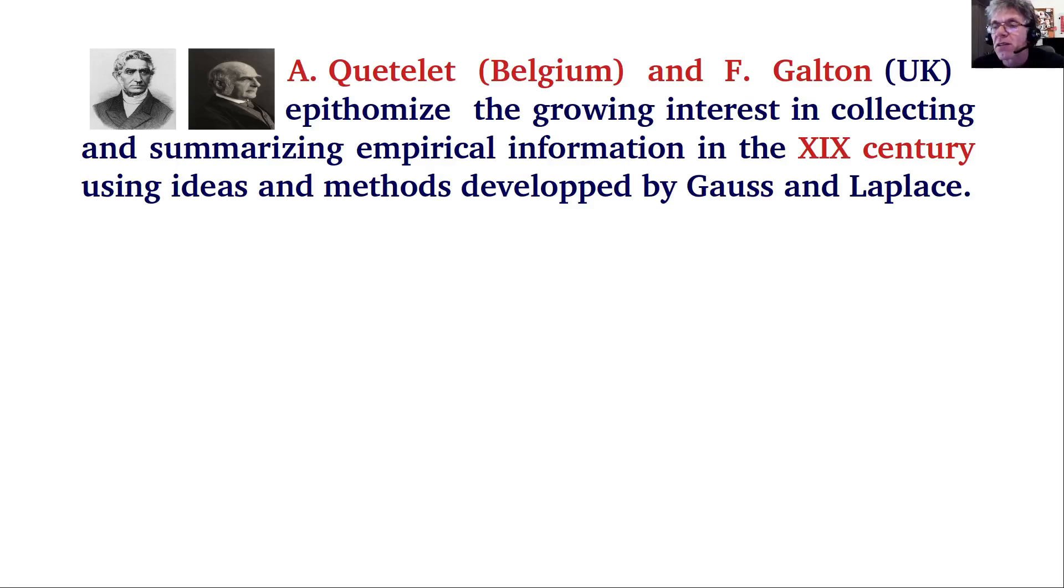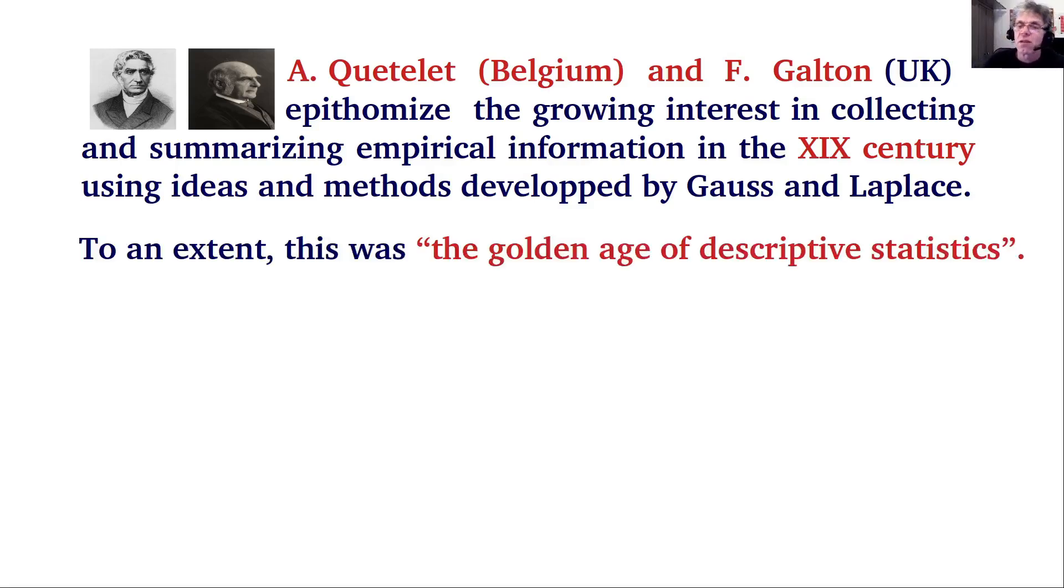Two great characters of the 19th century are Alphonse Quetelet, a Belgian astronomer, and Francis Galton, a British physician. They epitomized the growing interest in collecting and summarizing empirical information in the 19th century, for which they used mostly the ideas and methods developed by Gauss and Laplace. To a large extent, the 19th century was called the golden age of descriptive statistics. This is when many common features we use nowadays, such as histograms, means, variances, and so on, were devised to summarize increasing amounts of empirical information.